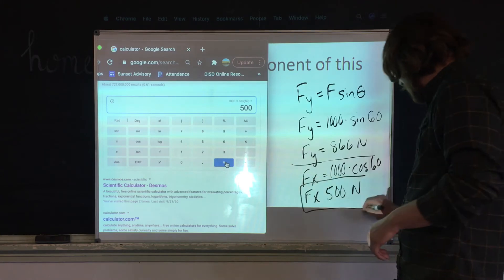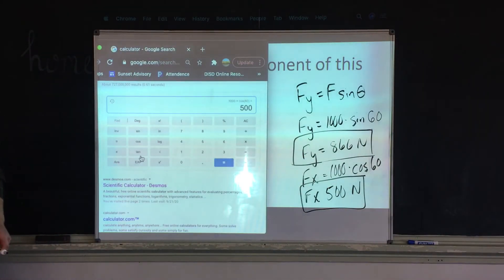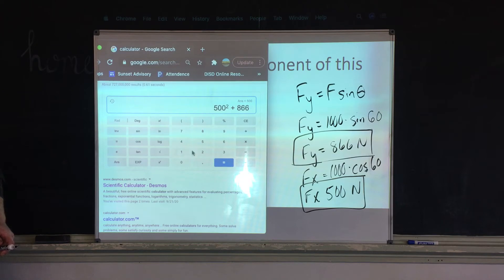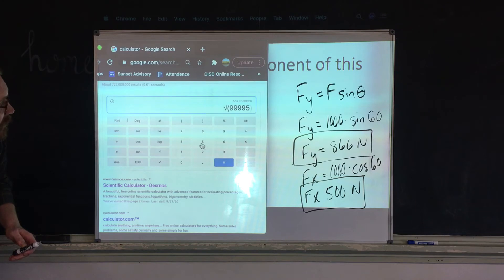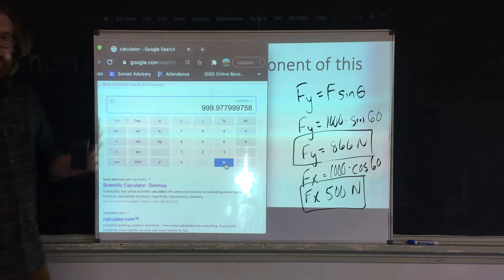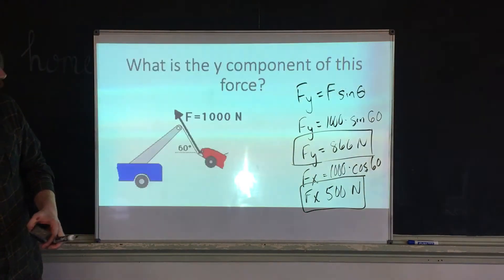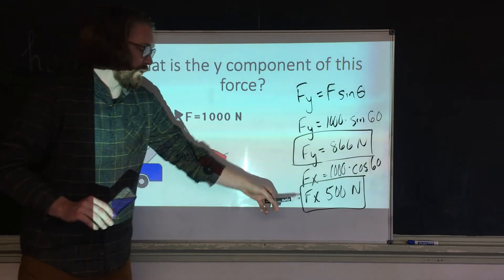To verify: 500² + 866² equals a very large number, and the square root of that is 1000. Trigonometry doesn't lie — math always works. So we've found both the x-component and y-component of that force.